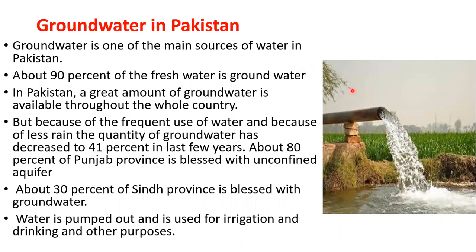Now, ground water in Pakistan. Looking at this picture, you can see a tube well throwing water into a small pond with crops behind it. Ground water is one of the main sources of water in Pakistan. About 90% of the fresh water people use for drinking and washing is ground water. Pakistan has plenty of ground water, but unfortunately due to less rainfall and more water extraction for agriculture, ground water has decreased by 41%.